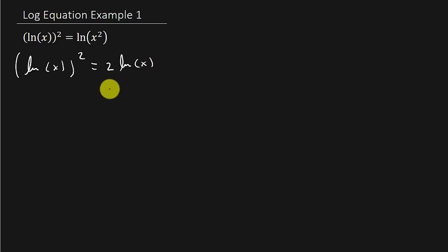And then, I'm going to subtract 2 natural log x to both sides, and that's going to give me natural log x, all of that squared, minus 2 natural log x equals 0.